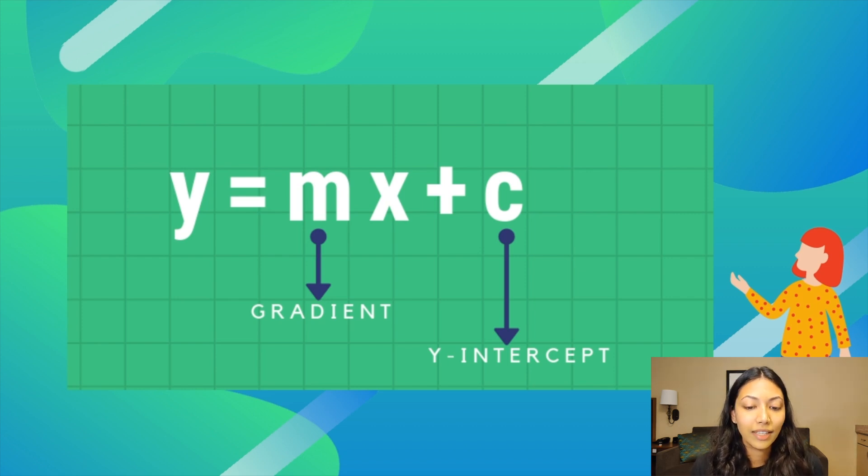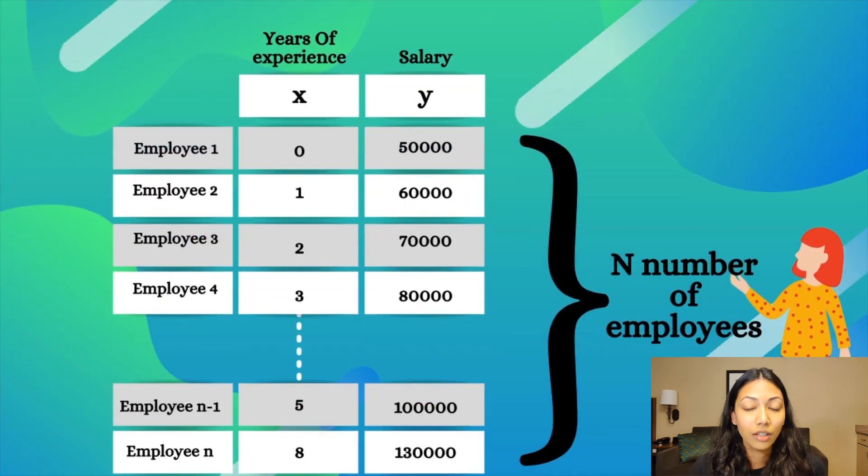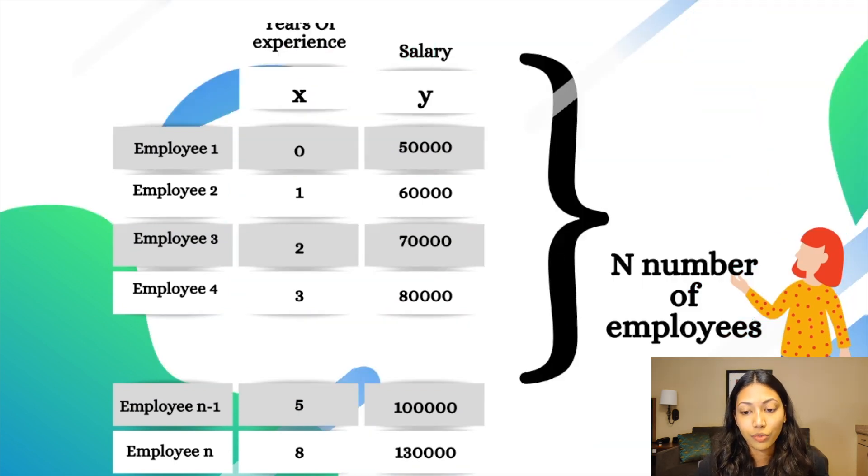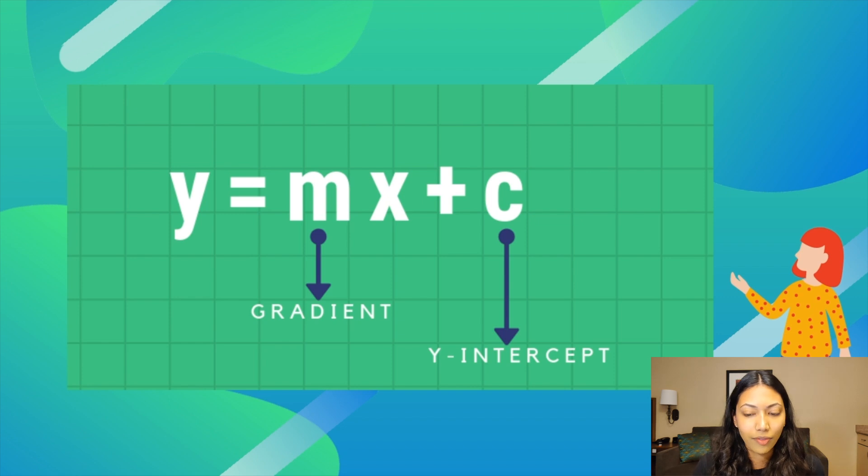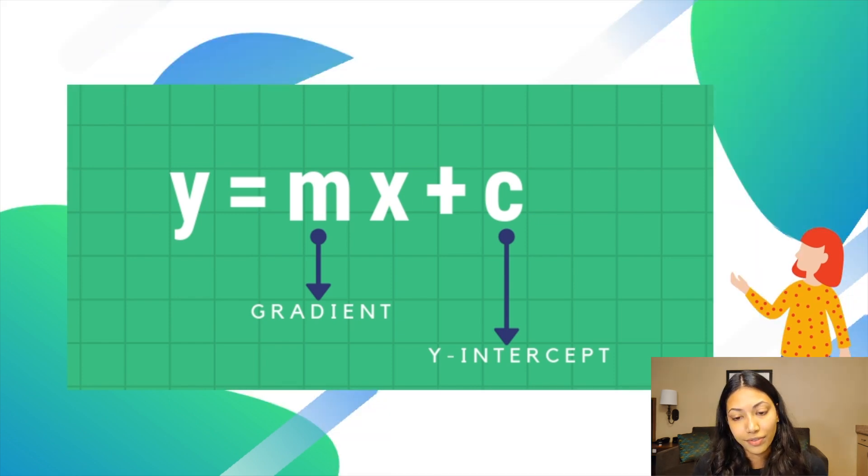And we've seen this many times before. It's an equation of a straight line. Now let's look at the data that this recruiter has. She has a lot of data of tons of different employees and their salaries. And we notice that if an employee has zero years of experience, so when they're starting out, they're offered a salary of $50,000. If an employee has one year of experience, they have a salary of $60,000. So as you notice, it's just a $10,000 increment for every year of experience that you have.